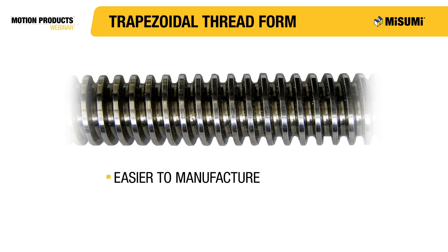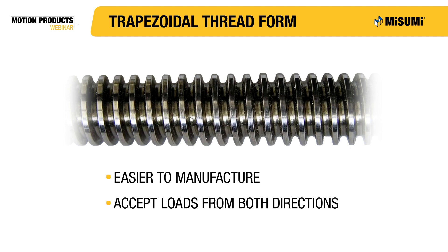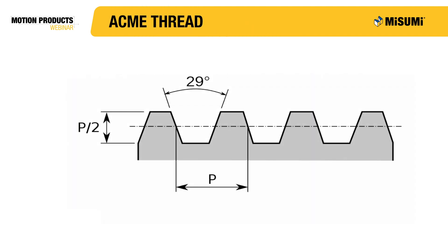Trapezoidal threads are easier to manufacture than square threads and can accept loads from both directions, but they are less efficient than square threads. Because they are easier to manufacture and can accept loads from both directions, trapezoidal threads are very popular on lead screws. They can also handle large axial forces compared to square threads, due to the fact that they have a comparatively large root. In the industry, there are two very popular forms of trapezoidal threads: ACME and trapezoidal metric.